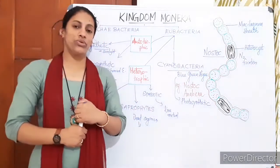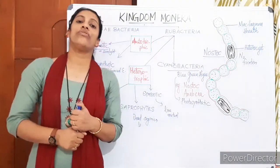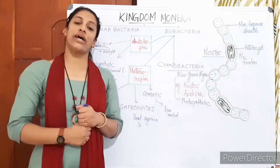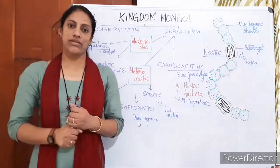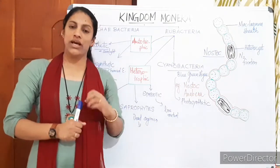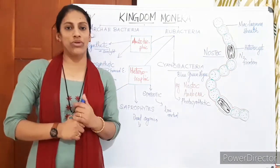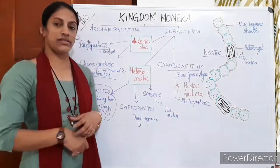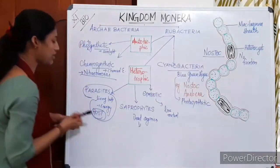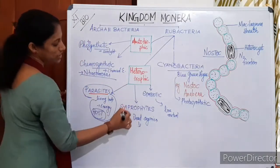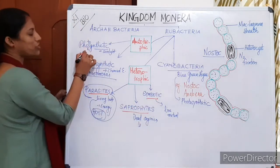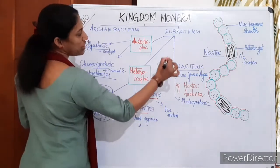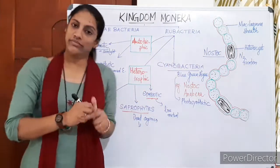Saprophytes like Pseudomonas and Bacillus help in decomposition, deriving nutrients from dead organisms and aiding in chemical breakdown. So among heterotrophic bacteria we have parasites, saprophytes, and symbionts. Among autotrophic bacteria we have phototrophs and chemotrophs. And then there are also cyanobacteria as a separate group.